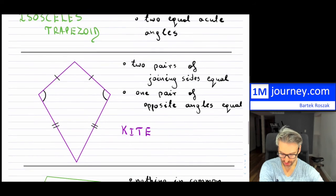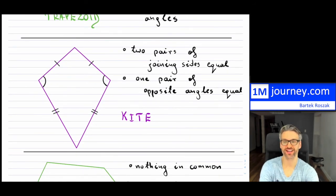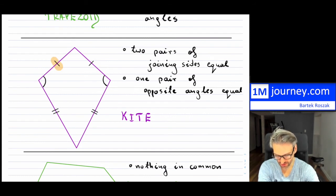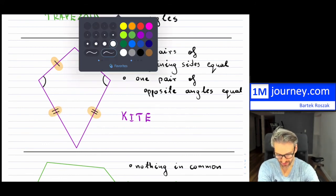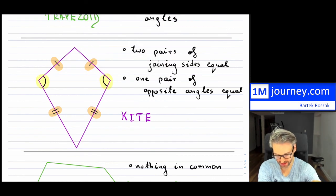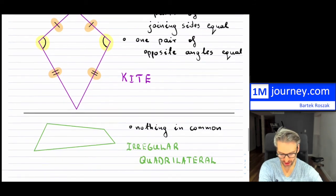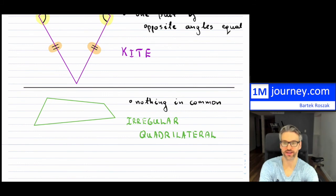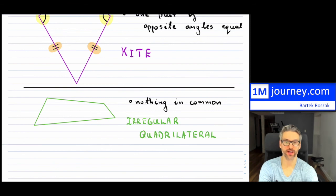The last special one looks like a kite. In a kite, two sides are the same and then another two sides are the same, and these opposite angles are also the same — that's a special quadrilateral. Finally, there's an irregular quadrilateral where nothing is in common: no angles and no sides are identical to each other, and they're not parallel to each other.